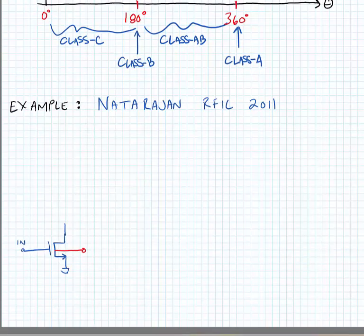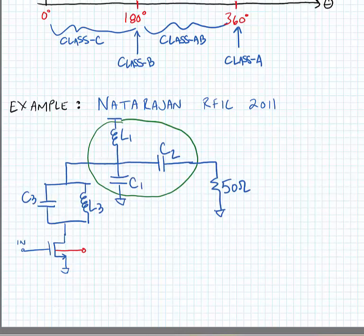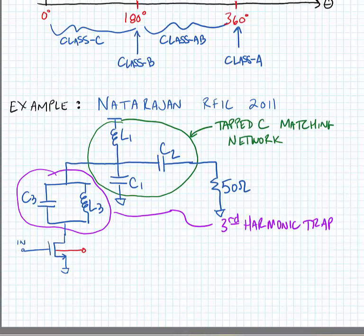A Class-C amplifier from recent literature was from Karthik Nadarajan in RFIC in 2011. I'm going to draw the schematic here. We have a couple of passive components: L1, C1, and C2 are a tapped-C matching network. L3 and C3 are a third harmonic trap. It's a parallel resonant network designed to prevent the third harmonic current from flowing through to the output.